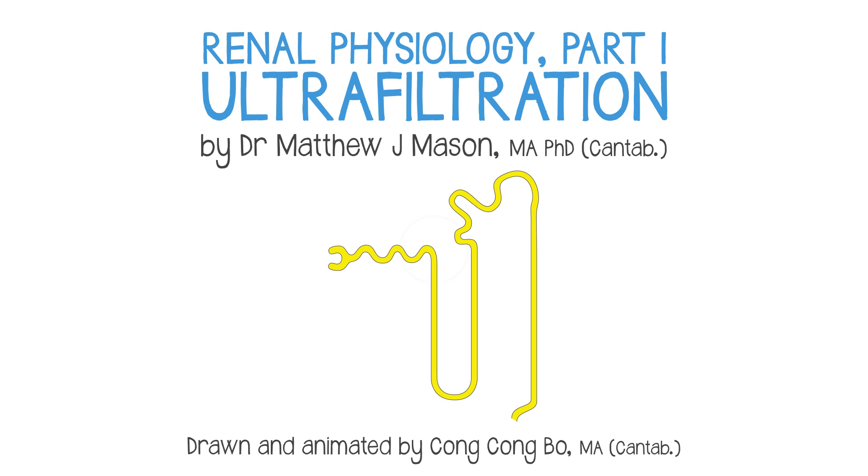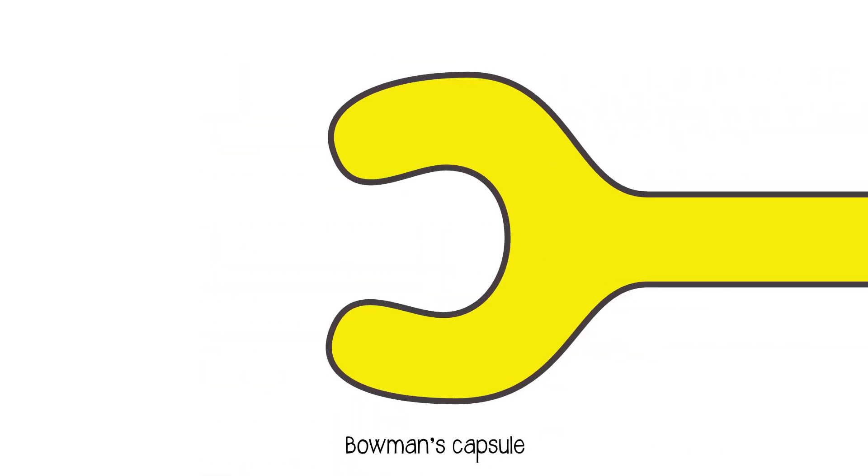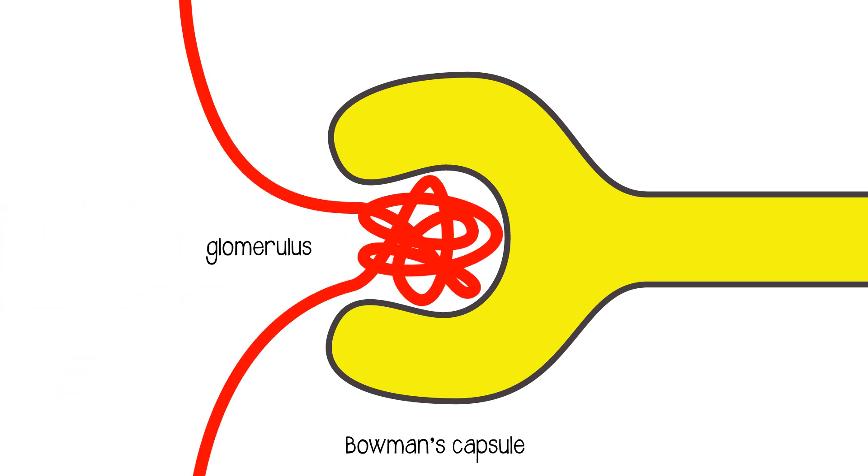The first part in the diagram is the Bowman's capsule, and this consists of a glomerulus, which is a tuft of capillaries, which is surrounded by the capsule itself, which is going to be the first part of the nephron tubular system.